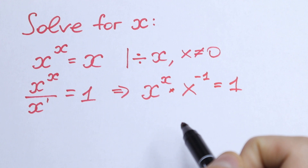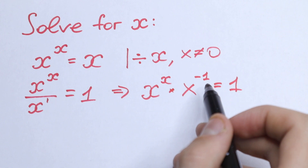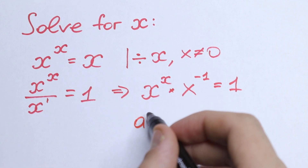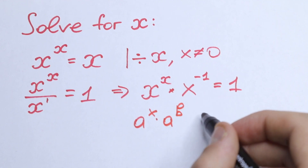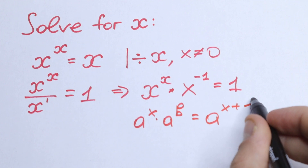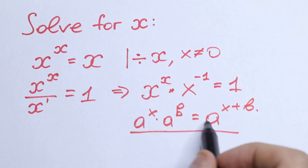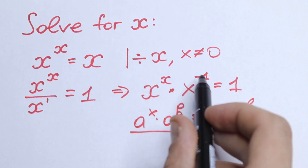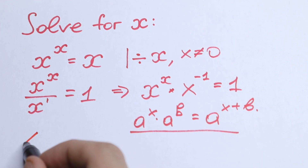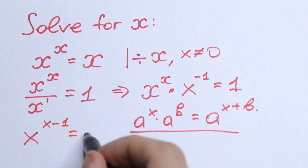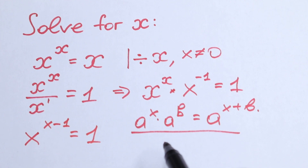Take a look — we have the same base but different powers. We use the rule: if we have a to the power x times a to the power b, we can write it as a to the power x plus b. Applying this rule here, we get x to the power x minus 1 equal to 1.